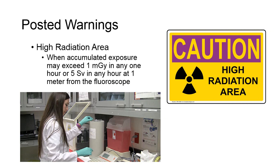High Radiation Areas: If it is feasible that the accumulated exposure might ever exceed 1 milligray in any 1 hour, or 5 sieverts in any 1 hour at 1 meter from the fluoroscope, the sign posted must read 'Caution, High Radiation Area.' This would typically include hot labs and nuclear medicine departments, and tags for radioactive patients or corpses.